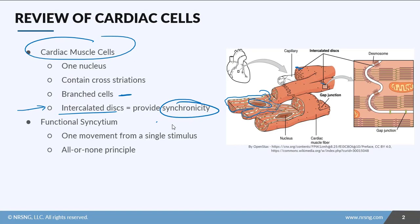So every time an action potential is delivered into the electrical conduction system of the heart, all the heart cells are going to work together. This leads to the concept called functional syncytium — one movement from a single stimulus. You get one action potential and all of them work together. This reinforces the all-or-none principle: either all of the cardiac cells contract, or none of them contract. You don't get contractility of just a few muscle cells.